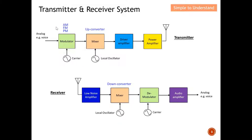This is what we call modulation — there will be either amplitude modulation, frequency modulation, or phase modulation. At the output of the modulator will be the modulated signal, which is a combination of the modulating signal plus the carrier, where either the amplitude, frequency, or phase changes according to the amplitude of the modulating signal. After the modulator comes the mixer, whose key purpose is to move from low frequency to high frequency, which helps avoid interference.